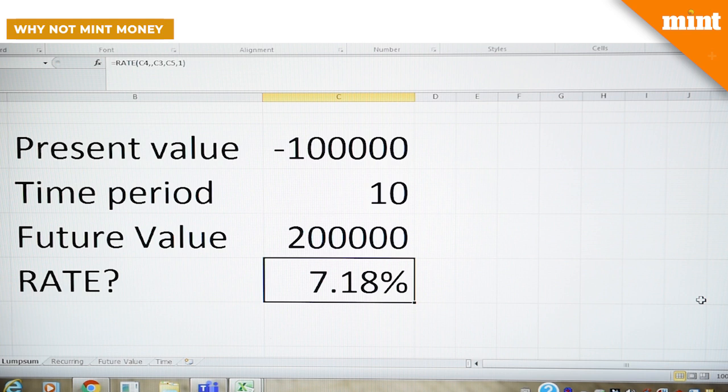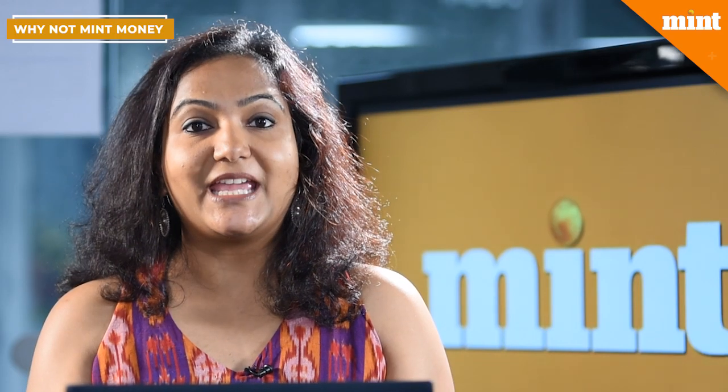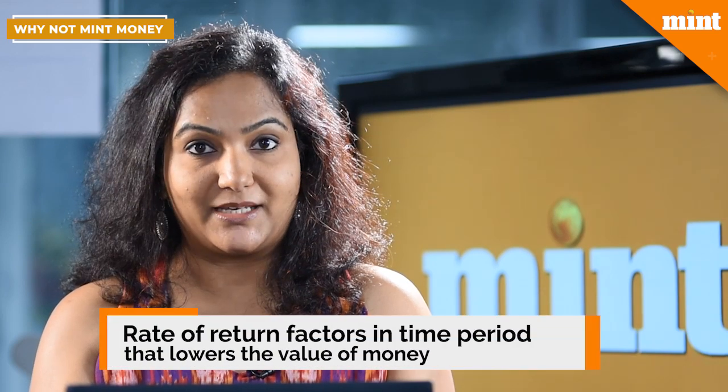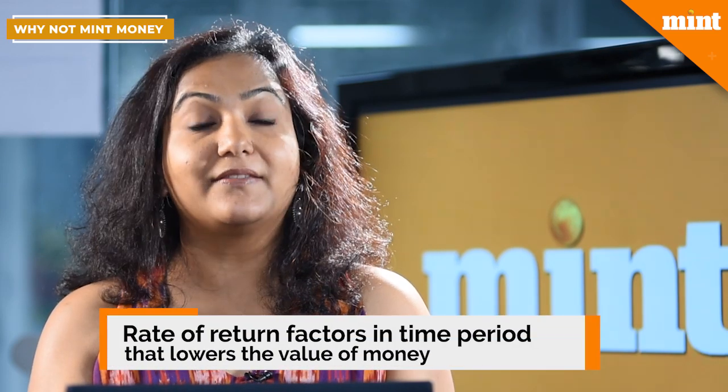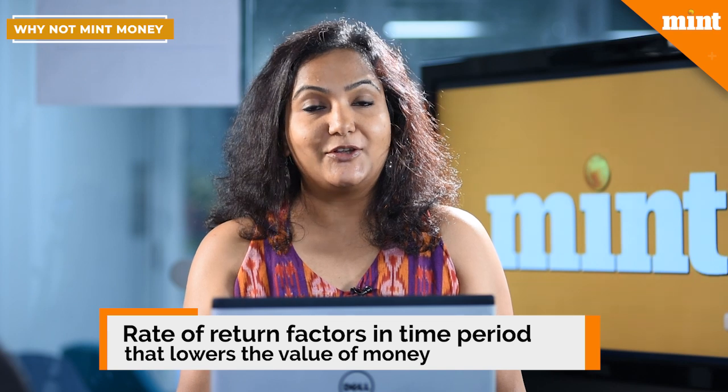So it's not a hundred percent return, it's a 7% return. This is because when the agent is promising to double your money, the agent is not looking at the time, which is what Excel calculates for you.